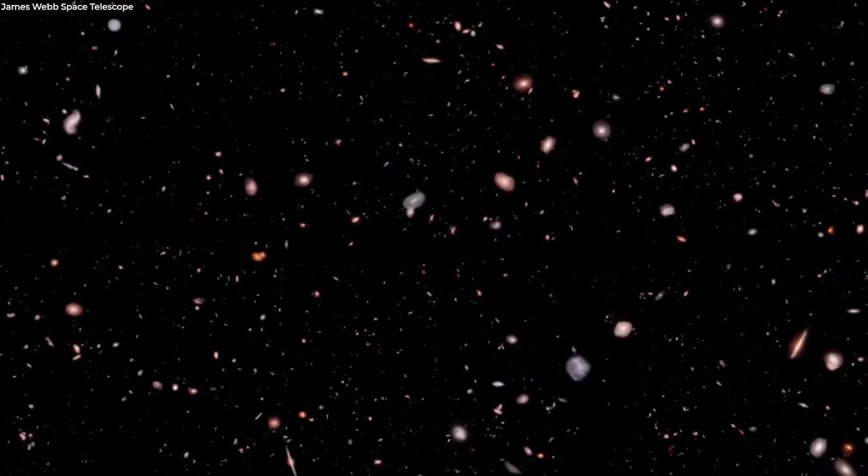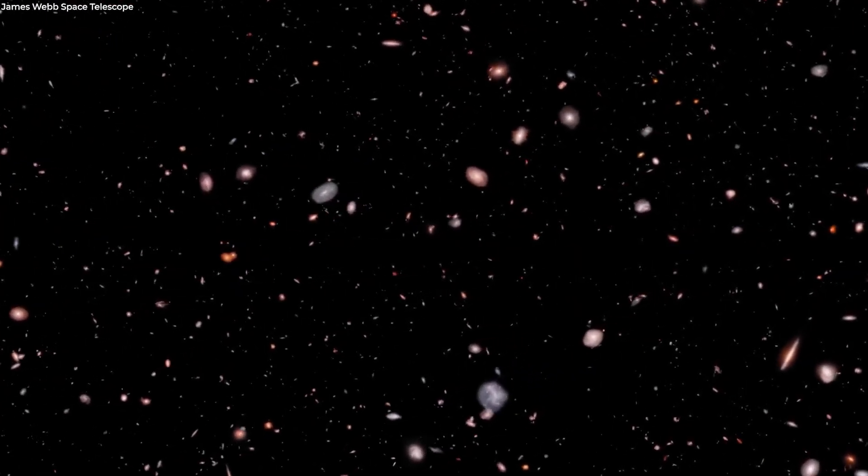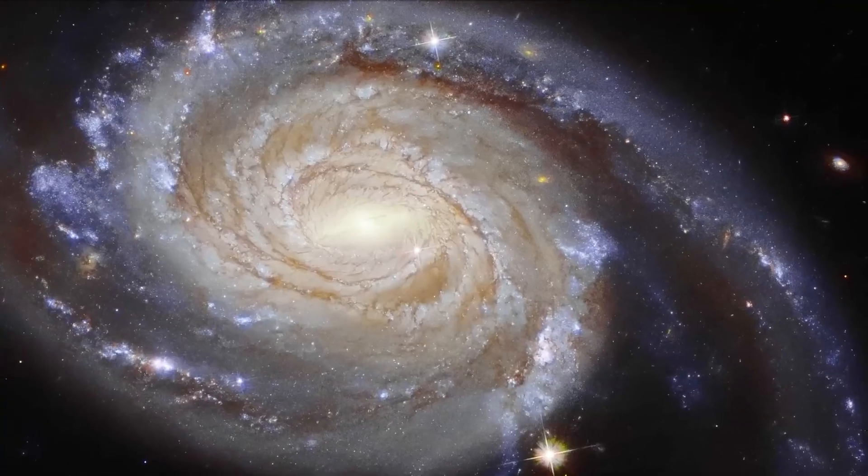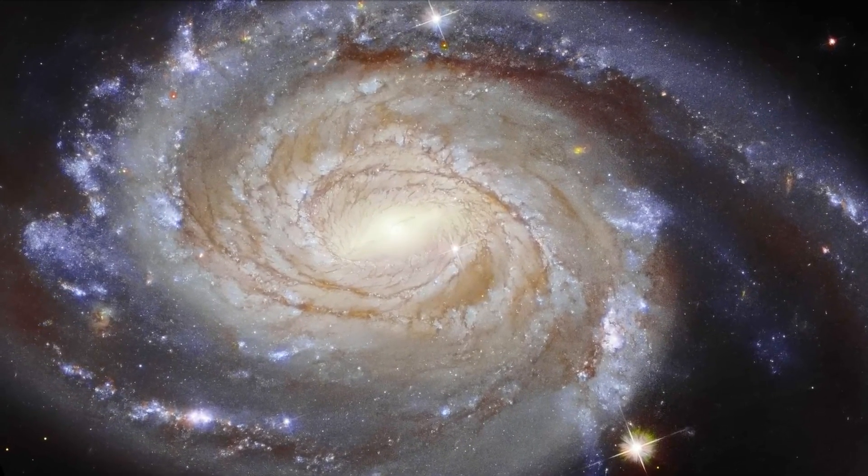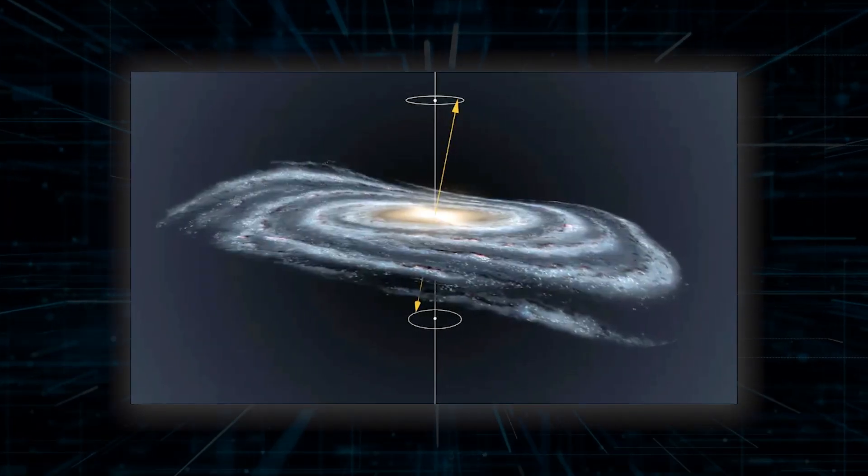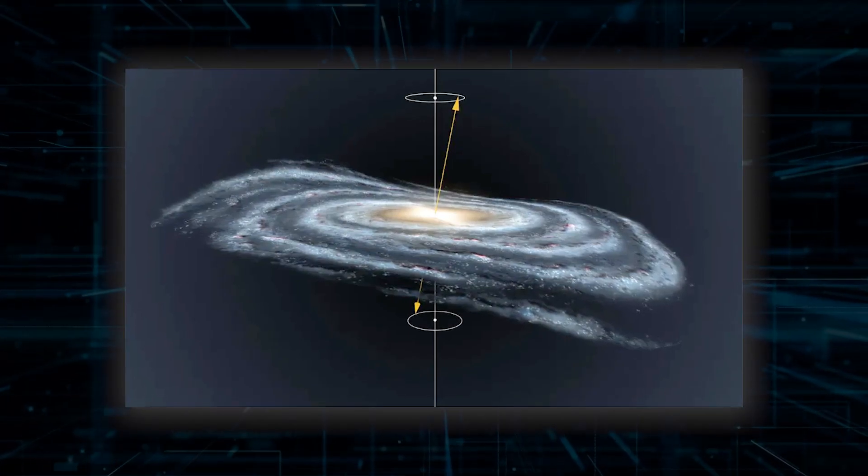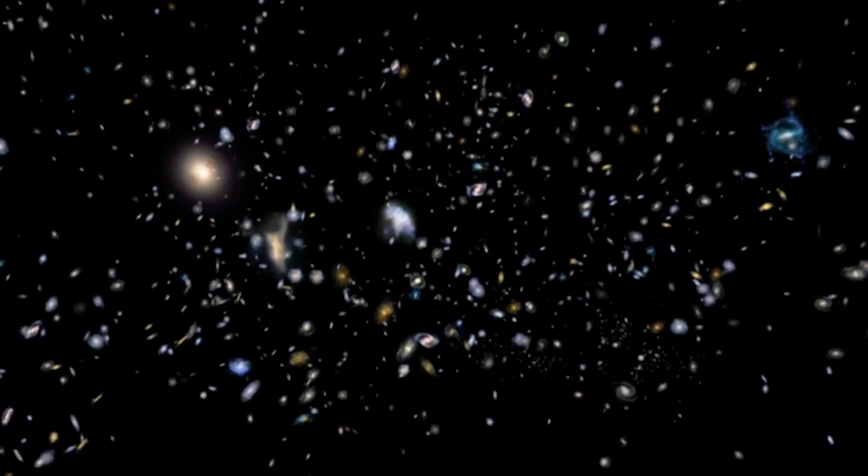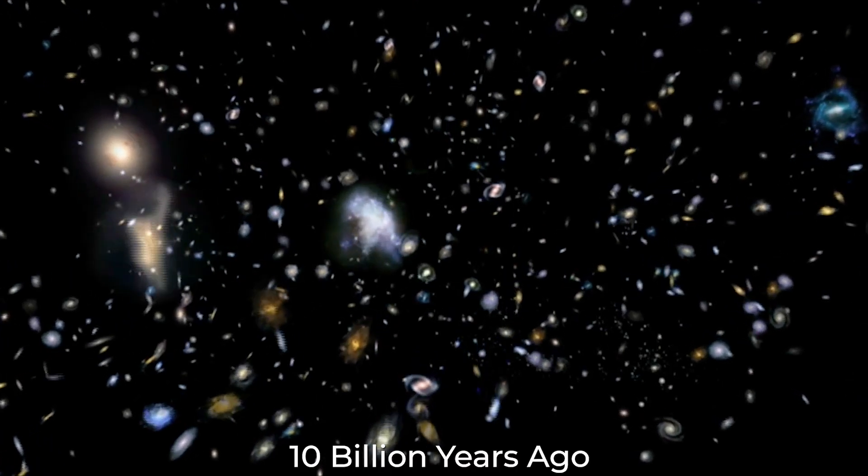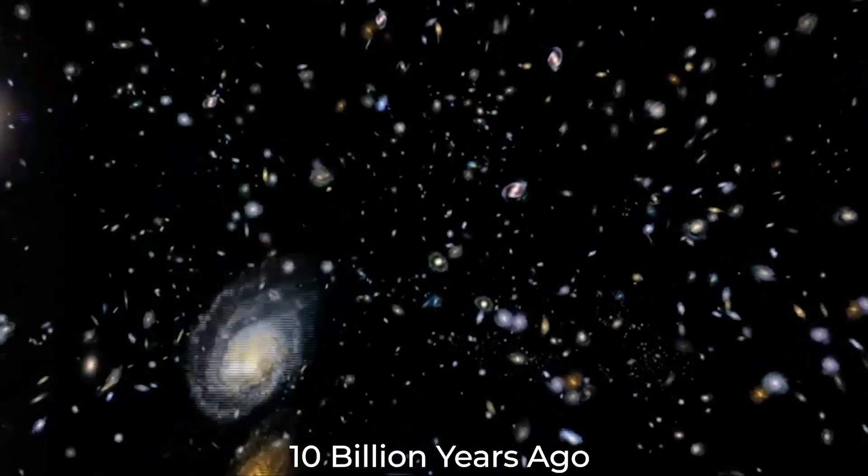Webb has made the surprising discovery of thousands of galaxies that look similar to our own Milky Way galaxy. These Milky Way-like galaxies with their beautiful disks and delicate spiral arms were first observed more than 10 billion years ago, swarming through the universe.